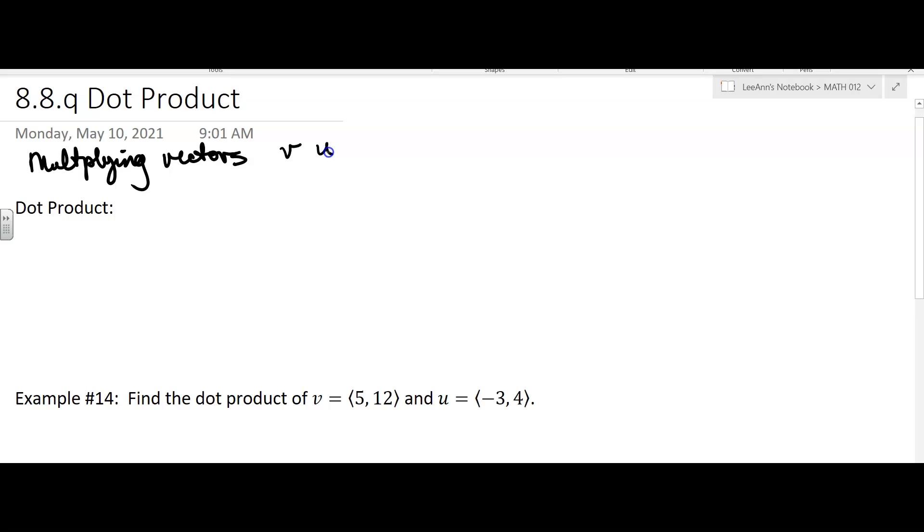It's V dot U, that's how they're going to write that. This is a scalar. When you're first starting to work with vectors, one of the big things is when is it a scalar and when is it a vector. When we do a dot product, you get a scalar.